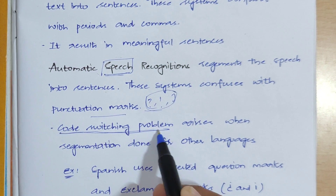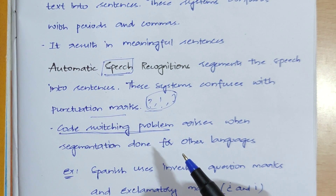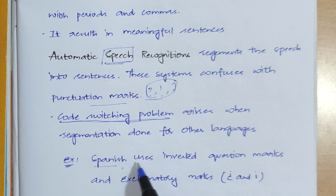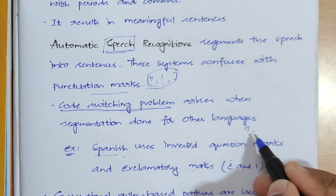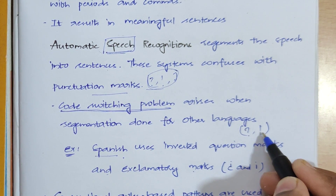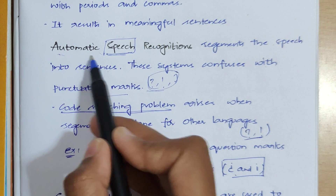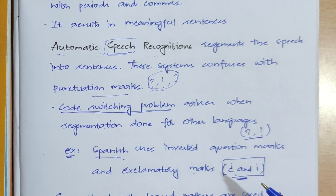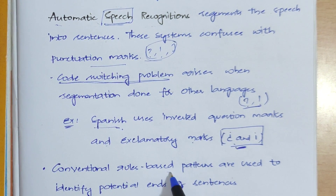The bigger disadvantage is the code-switching problem, which arises with some languages. In Spanish, for example, inverted question marks and exclamatory marks are used. In English, question marks and exclamatory marks have standard symbols, but in Spanish they are inverted. For these systems, it becomes difficult to recognize these symbols and detect the sentence boundary.